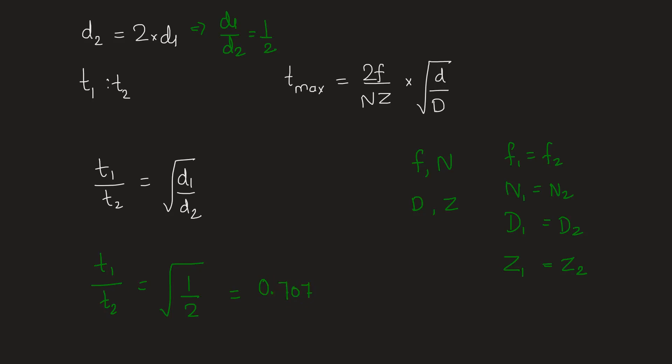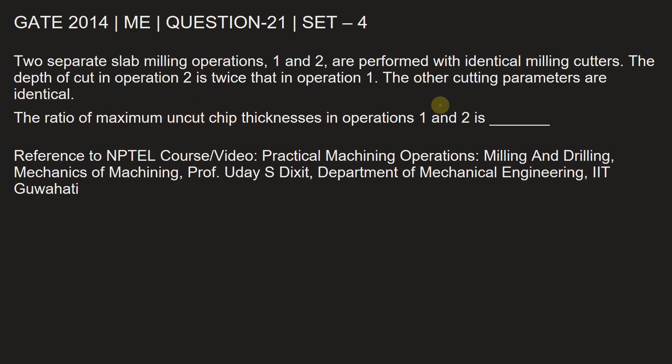Let's go back and fill in the answer. The ratio of maximum uncut chip thickness in operations 1 and 2 is 0.707.